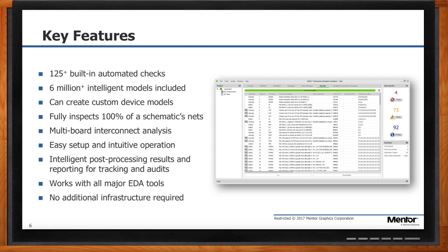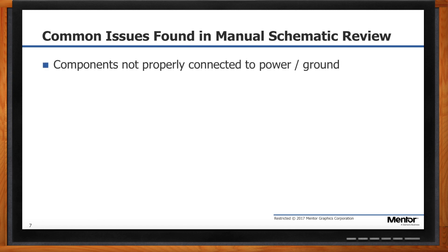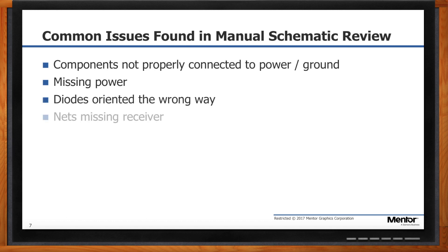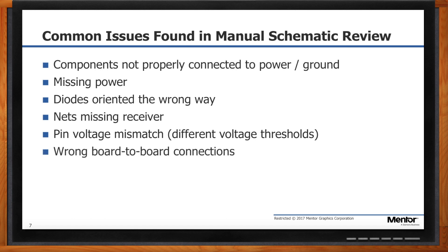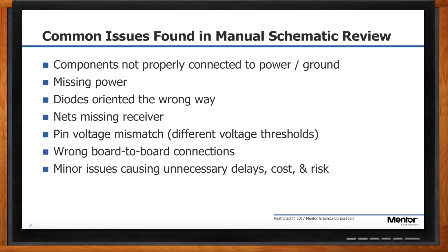Let's talk about the kinds of errors we typically make in schematics. If you're performing a manual schematic review, you're going to check for things like components not properly connected to power and ground, missing power or ground, diodes oriented the wrong way, pin voltage mismatch, and in a multi-board system, incorrect board-to-board connections. Those are all great issues to look at during a manual check, but that's really just scratching the surface of what you should be checking.